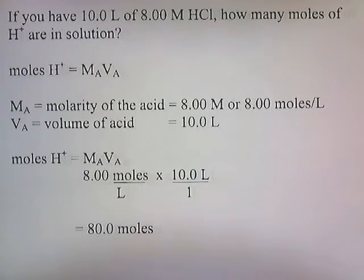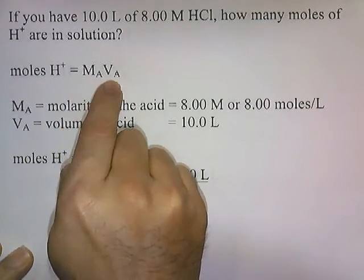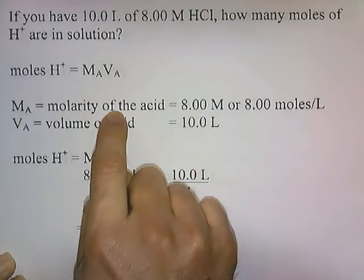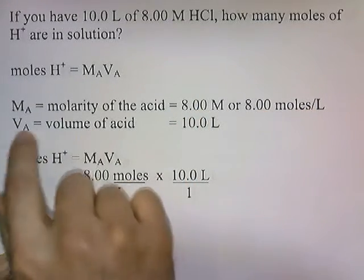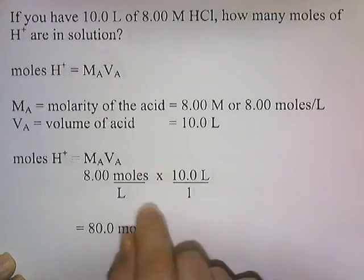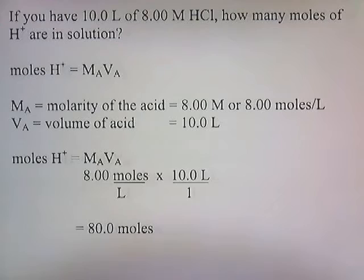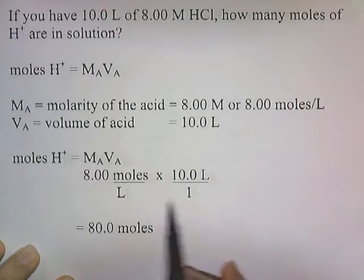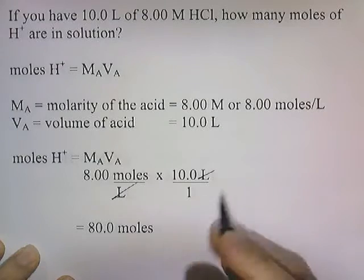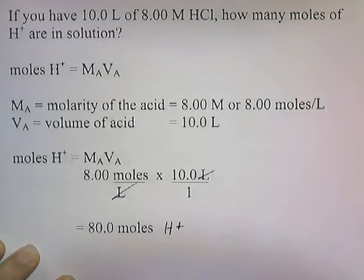If you have 10 liters of 8-molar hydrochloric acid, how many moles of H+ are in solution? One way to do it is to use this formula: the moles of H+ in solution equals the molarity of the solution times the volume of the solution. Ma, the molarity of the acid, is 8 moles per liter, and Va, the volume of the acid, is 10 liters. So 8 times 10 — the liters cancel — gives us 80 moles of H+.